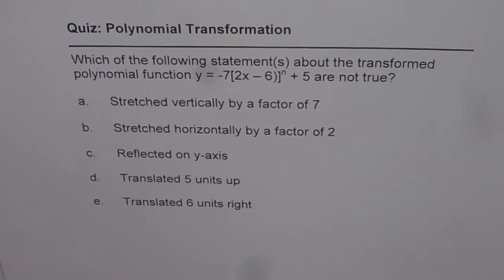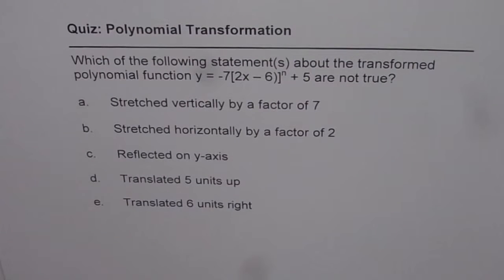Here is a test problem on polynomial transformation. The question is, which of the following statements about the transformed polynomial function y = -7(2x - 6)^n + 5 are not true? So, we are given 5 statements.